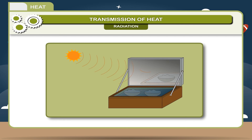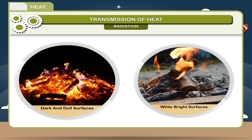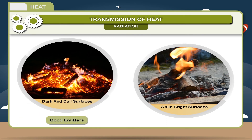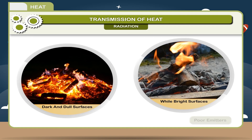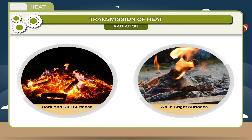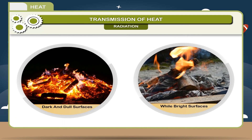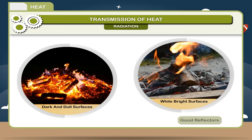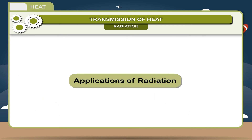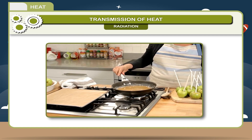Sun rays come to the earth without any intermediate medium and are also reflected like light. Dark and dull surfaces are good emitters of radiant heat energy while bright surfaces are poor emitters. Dark surfaces are good absorbers of heat energy while light or bright surfaces are good reflectors. Cooking utensils are painted black at the bottom because black surfaces are good absorbers of heat, making cooking faster.